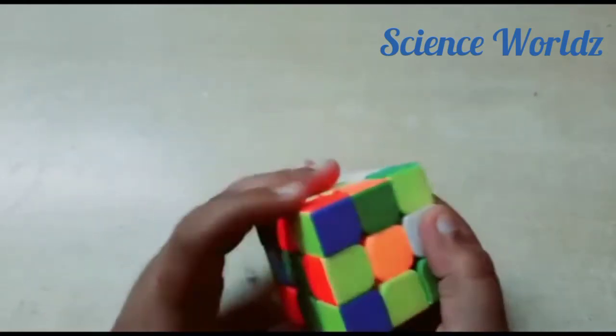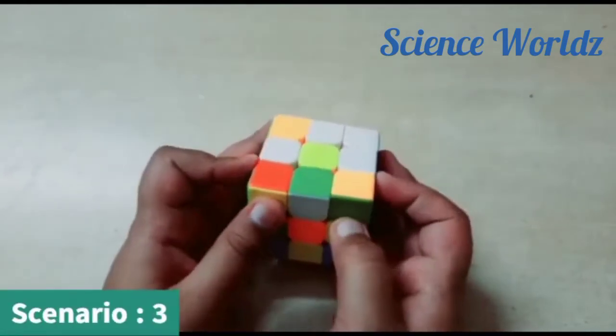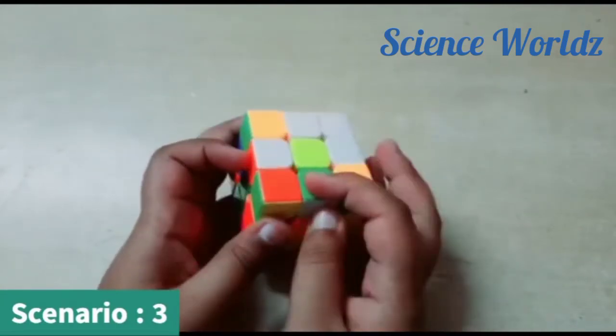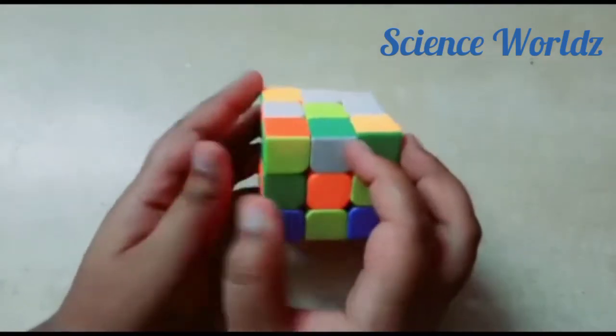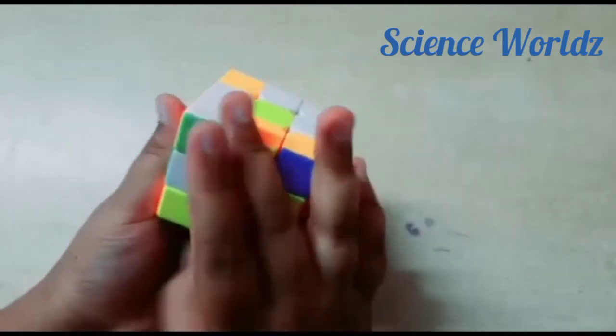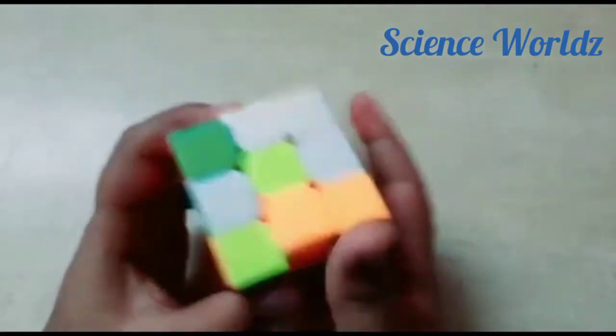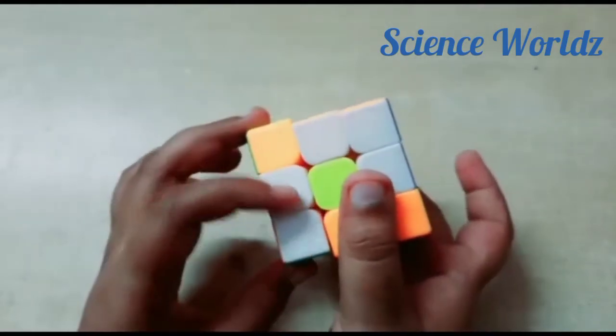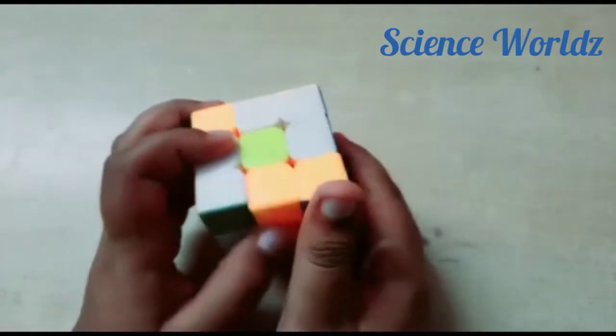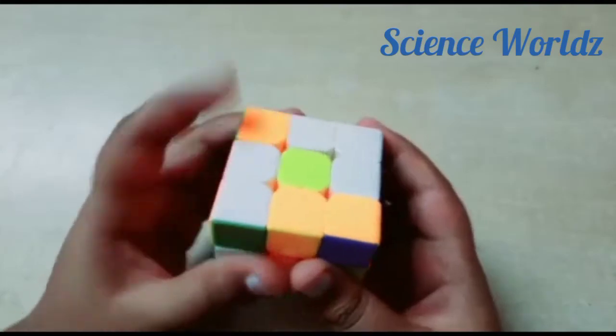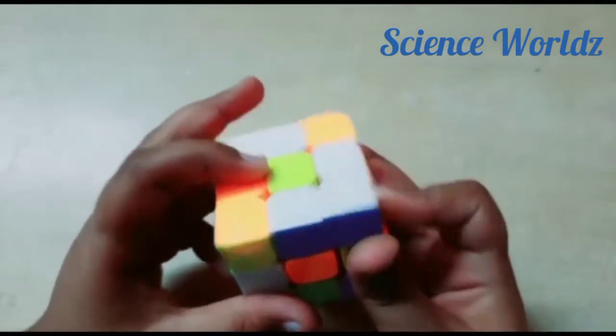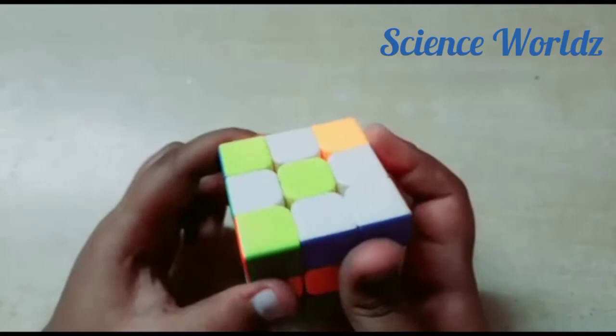For our third scenario, this is on the top layer but it is wrongly oriented. For this, we should turn this slice so that it comes to the second layer and turn this. But wait a minute. While we are turning it, this white color is disrupting. So, we should shift this color with a non-white color and then do it.